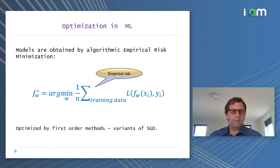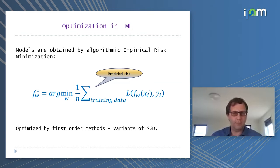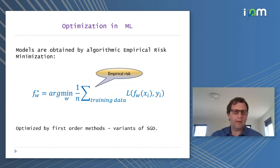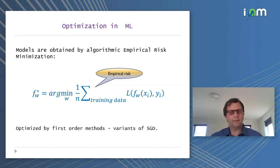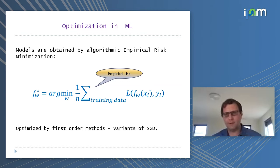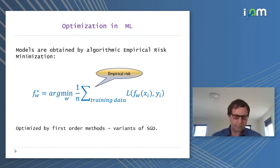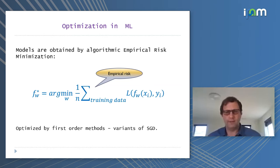Optimization in machine learning is simply the following: you choose a family of models — for example, a neural network with a certain architecture with parameters W. You have the empirical loss given data X, Y, and then you algorithmically minimize this empirical loss. Almost always this is done by versions of stochastic gradient descent, like SGD with momentum.